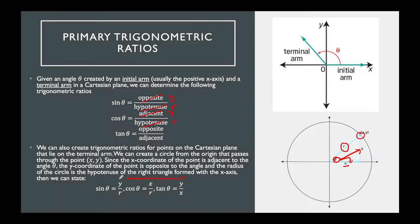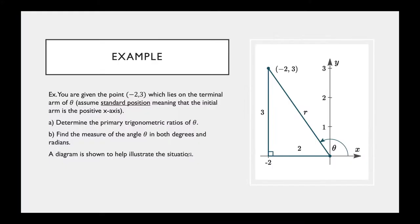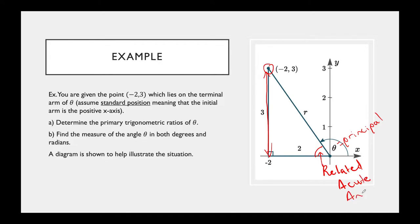This first example is not that different from grade 11. The only new thing is we'll find the angle in both degrees and radians. We're given the point (−2, 3). The y coordinate is 3, which is our opposite side. The angle we're looking for is the principal angle, and the angle used to create the right triangle is the related acute angle — the angle formed with the x-axis.